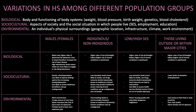We look at variations amongst males and females, indigenous and non-indigenous peoples, low and high SES, and those living outside or within major cities. In relation to biological factors, males have higher rates of abdominal fat and since the abdomen is close to the heart, there is an increased risk of heart disease. Also, men have high testosterone levels meaning they are more likely to engage in risk-taking behaviours. For sociocultural factors, there are gender roles and expectations — males are less likely to express their feelings openly, increasing the likelihood of developing anxiety or depression, and men are less likely to access healthcare, so conditions may go undiagnosed.